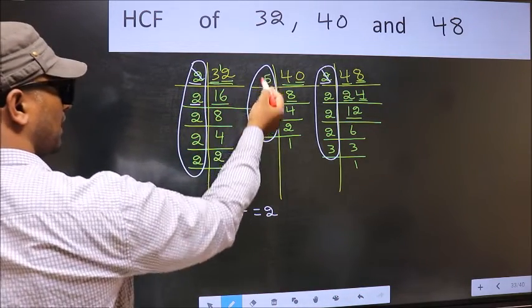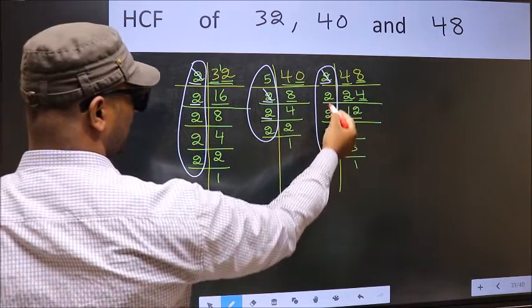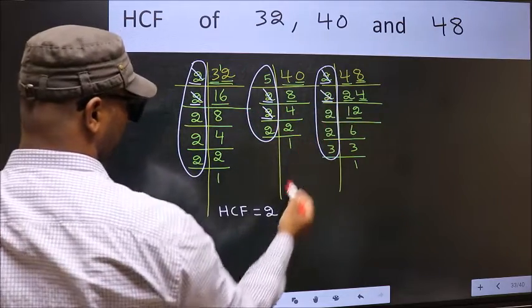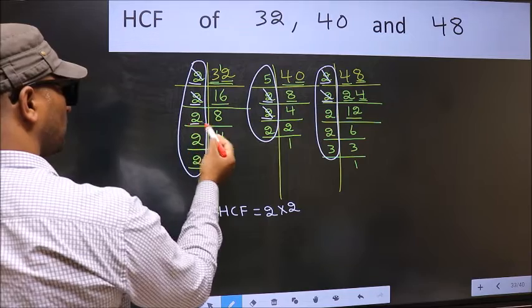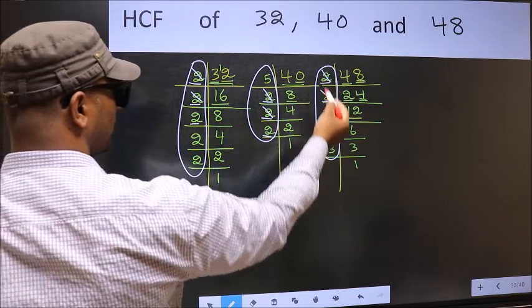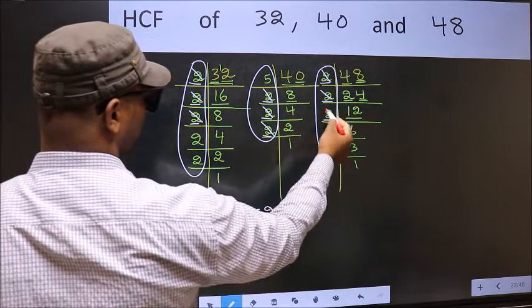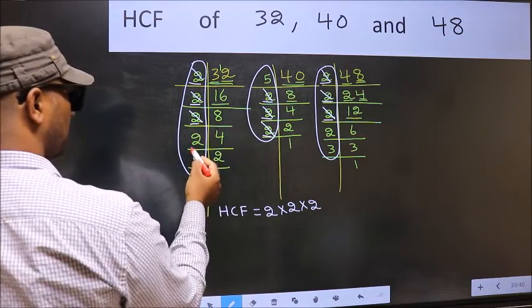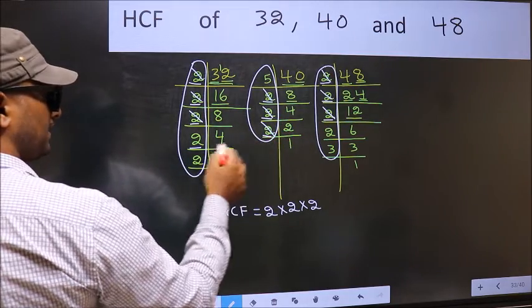Next number 2. Do we have 2 here? Yes. So go to the next place. Do we have 2 here? Yes. Next number 2. Do we have 2 here? No. So no need to check in the other place.